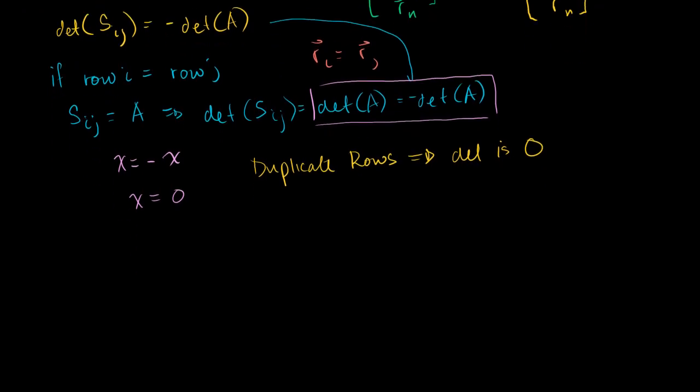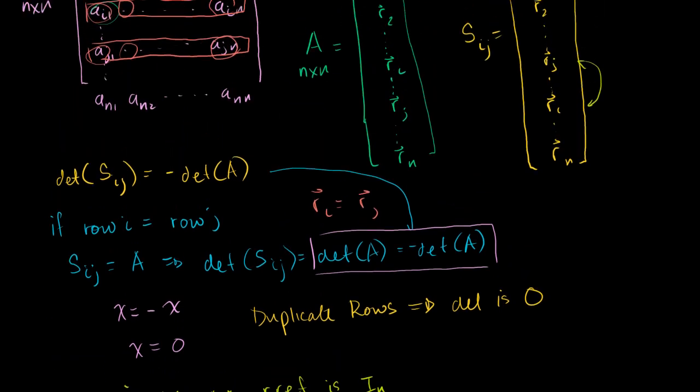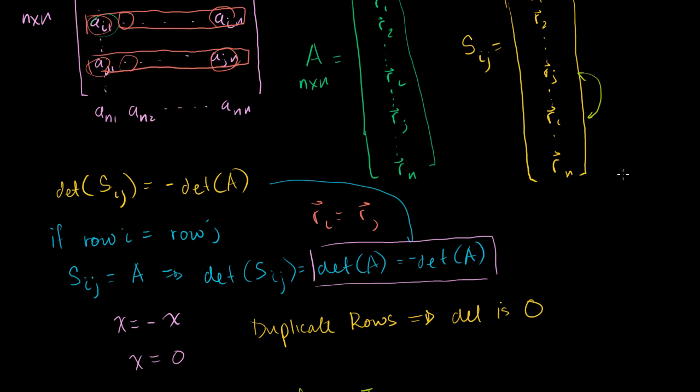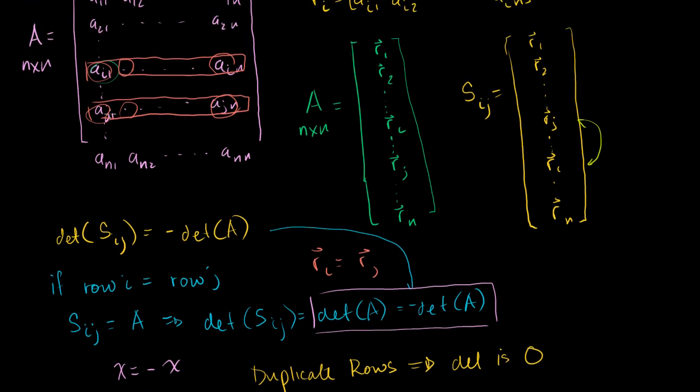We learned that a matrix is invertible if and only if the reduced row echelon form is the identity matrix. But if you have two duplicate rows, let's say these two guys are equal to each other, you could perform a row operation where you replace this guy with this guy minus that guy, and you'll just get a row of zeros. And if you get a row of zeros, you're never going to be able to get the identity matrix.